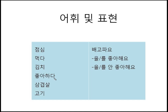좋아하다 is a verb meaning 'like.' 삼겹살 is a kind of pork — pork meat. 고기 is meat. 배고파요 is the expression for 'I'm hungry.' 을/를 좋아해요 — 을/를 is the object particle attached after the object of the sentence, and 좋아해요 means like. 을/를 안 좋아해요 — 안 is used to make a negative sentence, meaning 'I don't like something.'